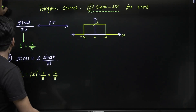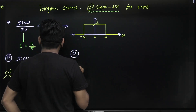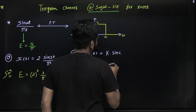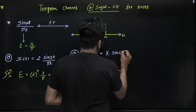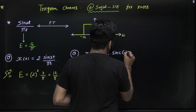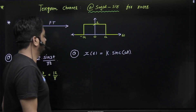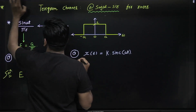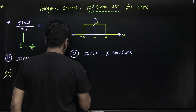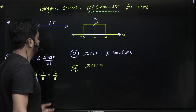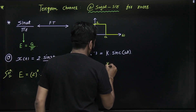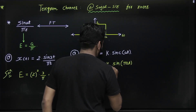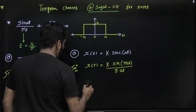Now suppose I am asking to find the energy of the sinc function — k·sinc(at), where a is a real number. What we can do is convert this sinc function into the standard format: k × sine(πat) / (πat).